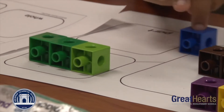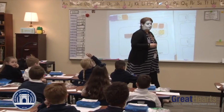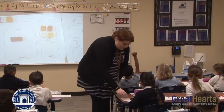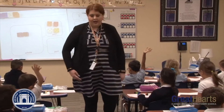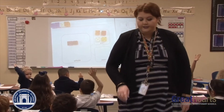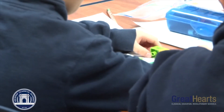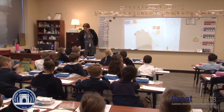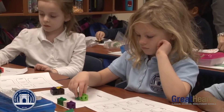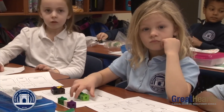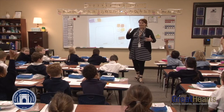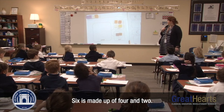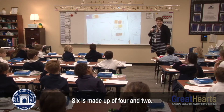How many more do I need to make six when I have four? I want you guys to count how many you have left in your whole and figure out how many more I need to make six. Now we are going to take the two that were left in the whole and bring them down to the second part. Who can tell me what six is made up of based on this number bond? Tanmay? Six is made up of four and two.